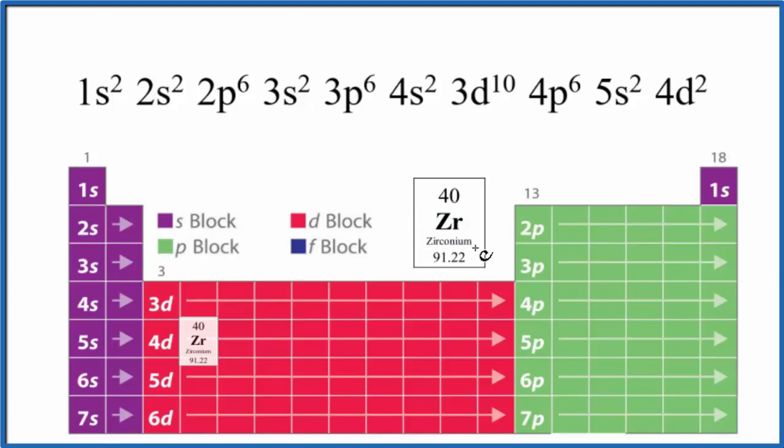The first thing we need to know is how many electrons we have to write the configuration. We figure that out by looking at the periodic table. So the atomic number for Zr is 40. That means it has 40 protons. Since Zr is neutral, there's no negative or positive sign. The number of protons is going to equal the electrons. So we have 40 total electrons for our electron configuration.